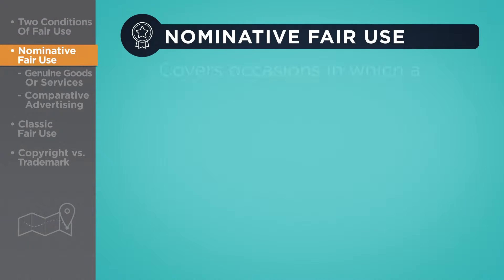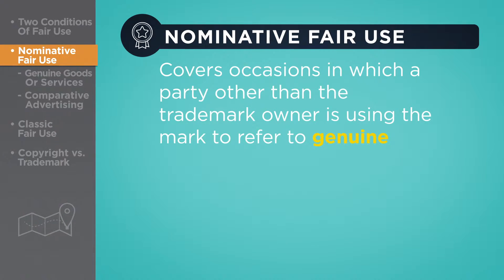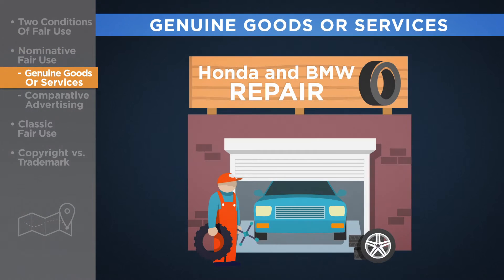Nominative fair use covers many occasions in which a party other than the trademark owner is using the mark to refer to genuine goods or services. An example of nominative fair use is when an auto repair shop advertises that it repairs BMWs and Hondas. It is using the mark Honda to refer to cars genuinely produced by the Honda Motor Company and simply asserting that it is able to conduct repairs on those cars.